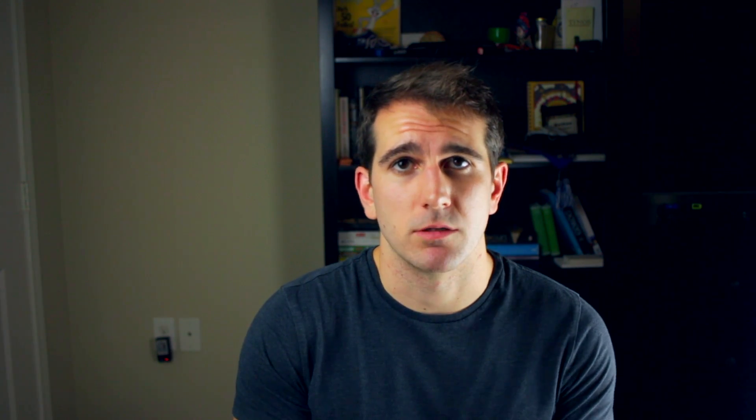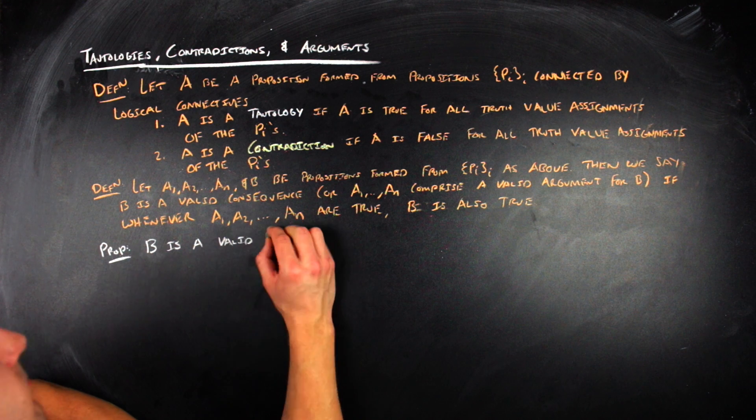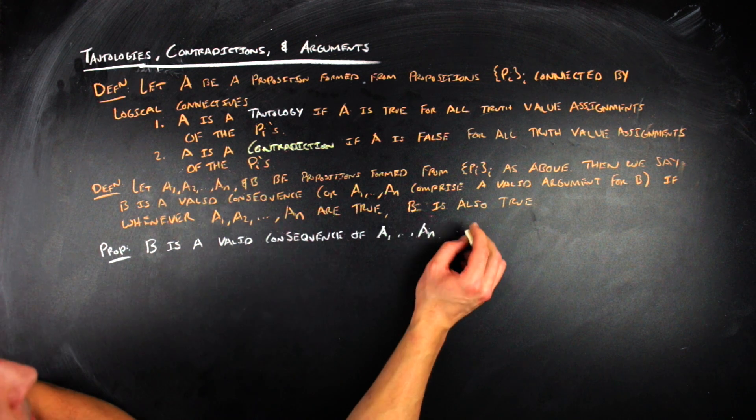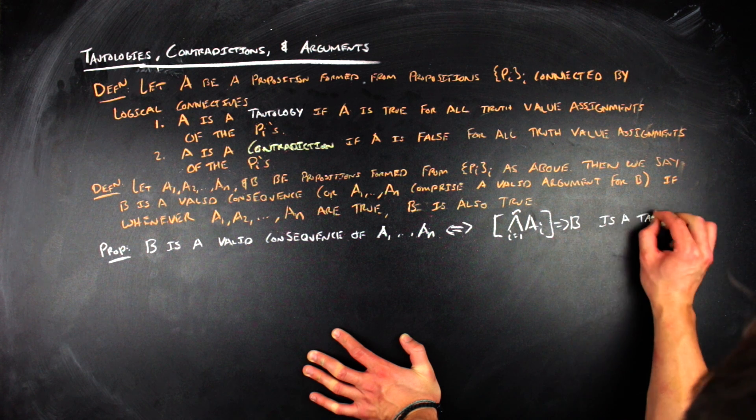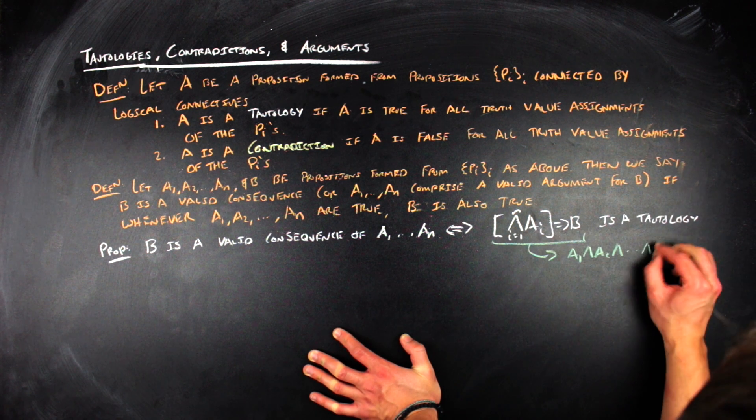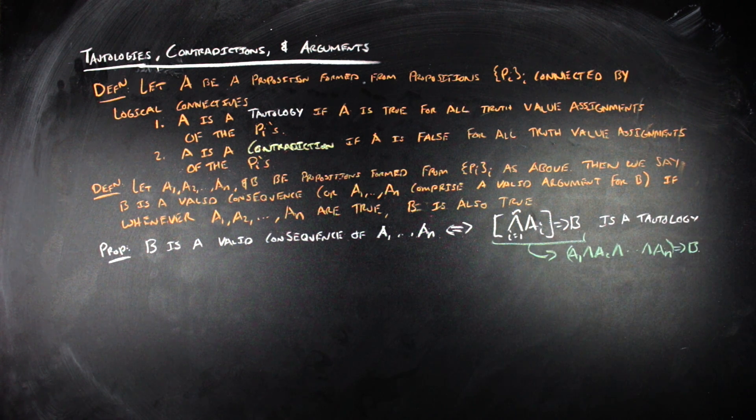And so although this definition is elementary when it comes to logic and logical arguments, there is a more mathematically structured way of presenting it, and that's the content of this next proposition. So B is going to be a valid consequence of A_1 through A_N if and only if, whenever we go through and AND together all of the A's and then imply B, that symbolic statement will be a tautology. So the proof of this is just using some definitions and some ideas of what we've already talked about in this video.